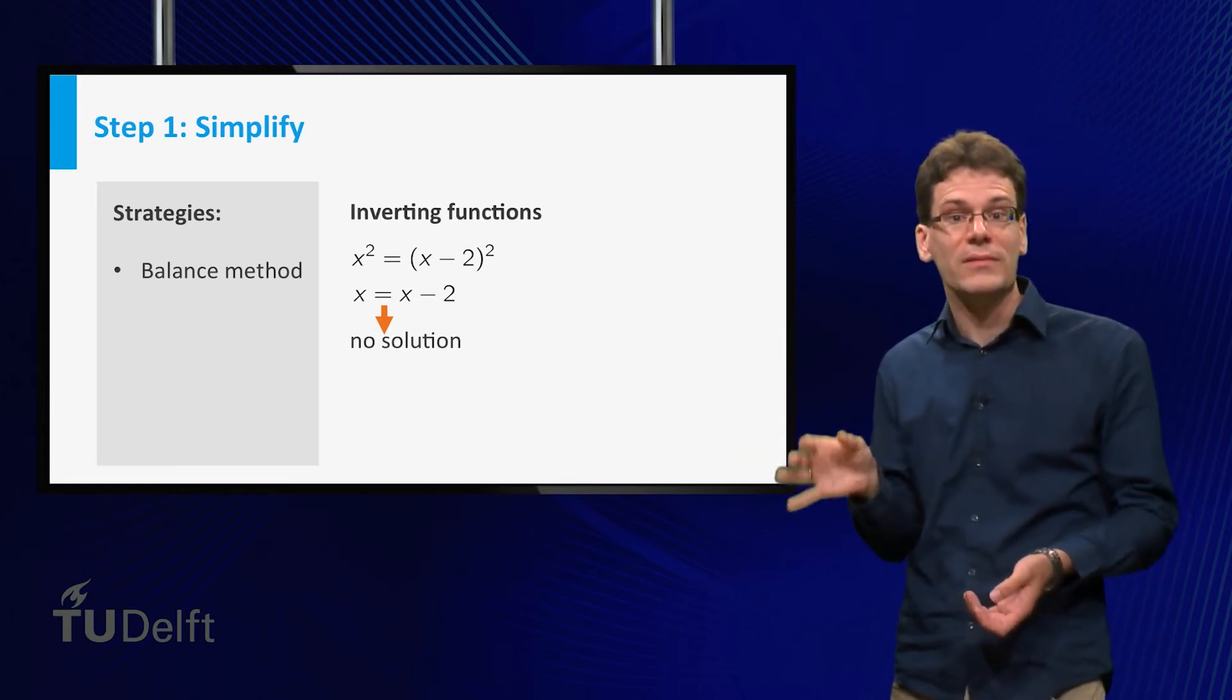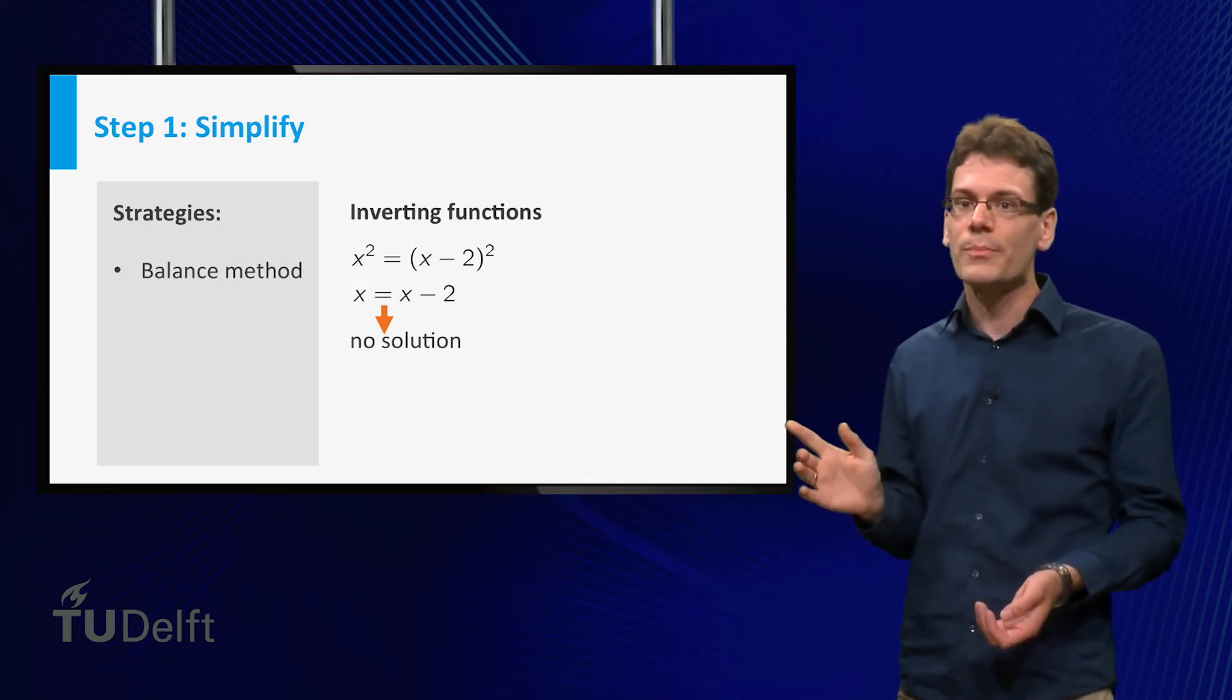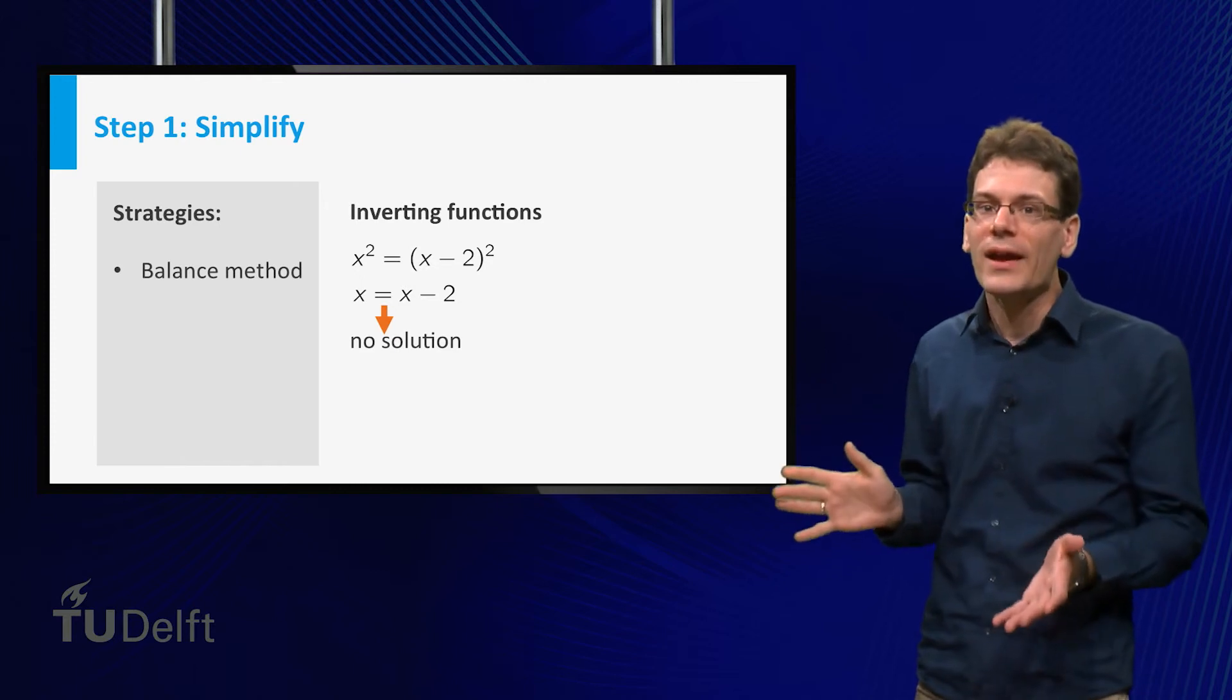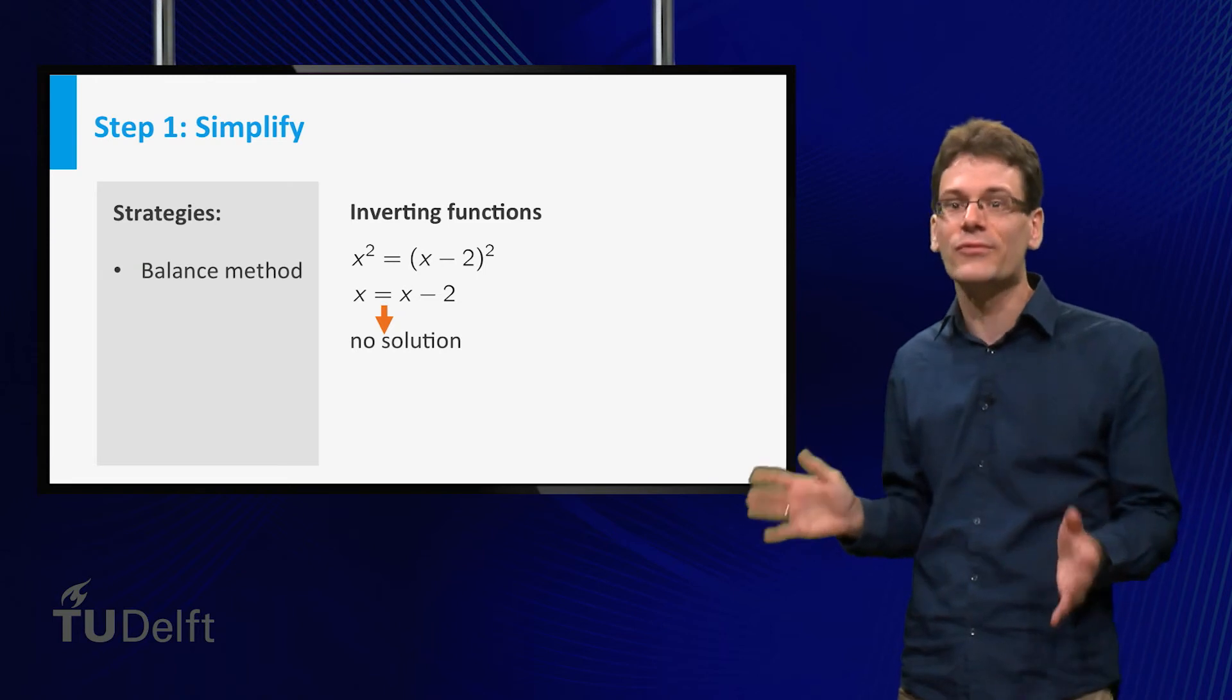But there is a solution, namely x equal to 1, as you can check. So what's the problem here? Well, we are trying to get rid of the square function by applying an inverse function, but the square function is not invertible.